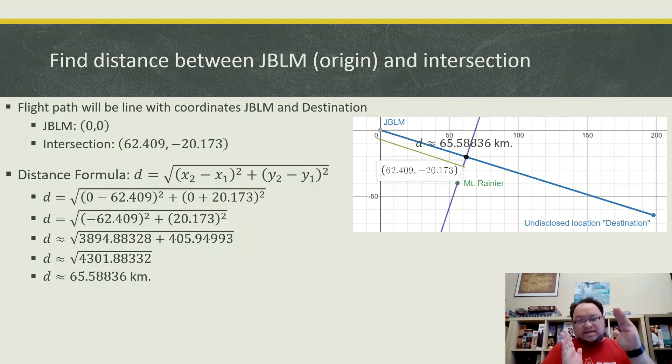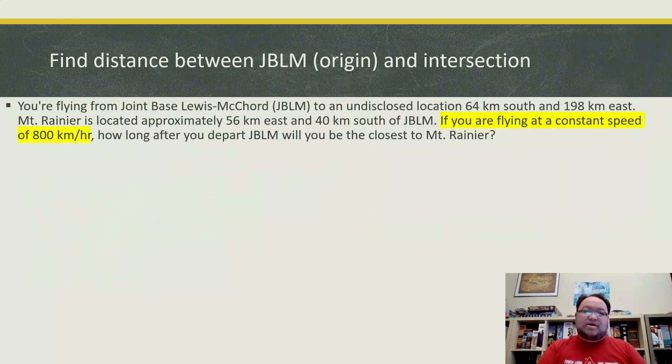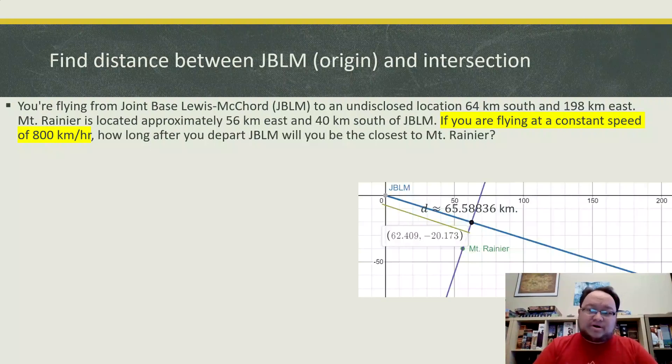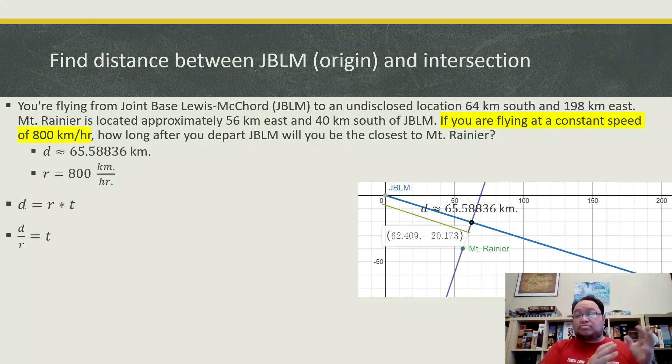So now that we know that that segment of it from JBLM to that intersection point is 65.58 kilometers, now we're going to figure out how do we use that information with our velocity, with knowing that our speed is 800 kilometers an hour. So we're going to use that as well as our rate in order to figure out how long.